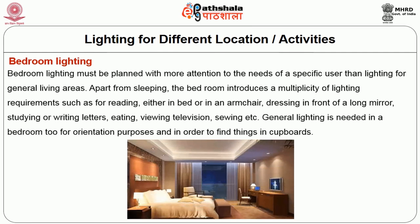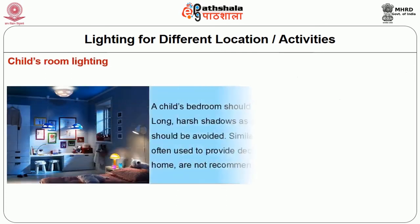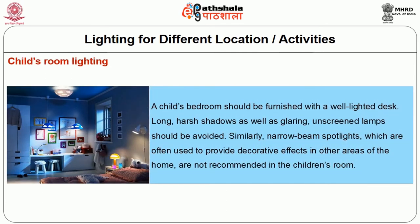Bedroom lighting must be planned with attention to the specific user's needs. Apart from sleeping, the bedroom requires lighting for reading in bed or in an armchair, dressing in front of a long mirror, studying or writing, eating, viewing television, and sewing. General lighting is also needed for orientation and finding things in cupboards. Children's room lighting: a child's bedroom should have a well-lighted desk. Long harsh shadows and glaring unscreened lamps should be avoided. Narrow beam spotlights used for decorative effects elsewhere are not recommended in children's rooms.